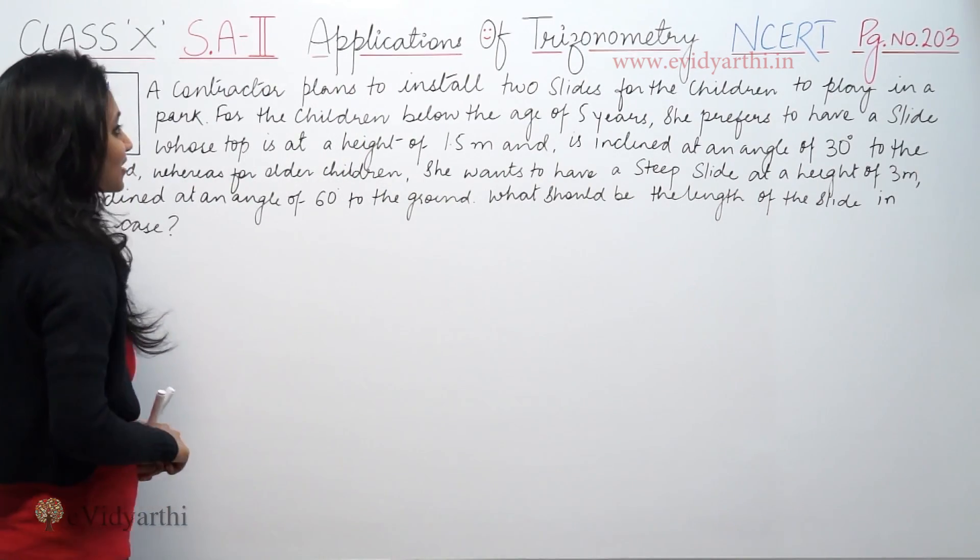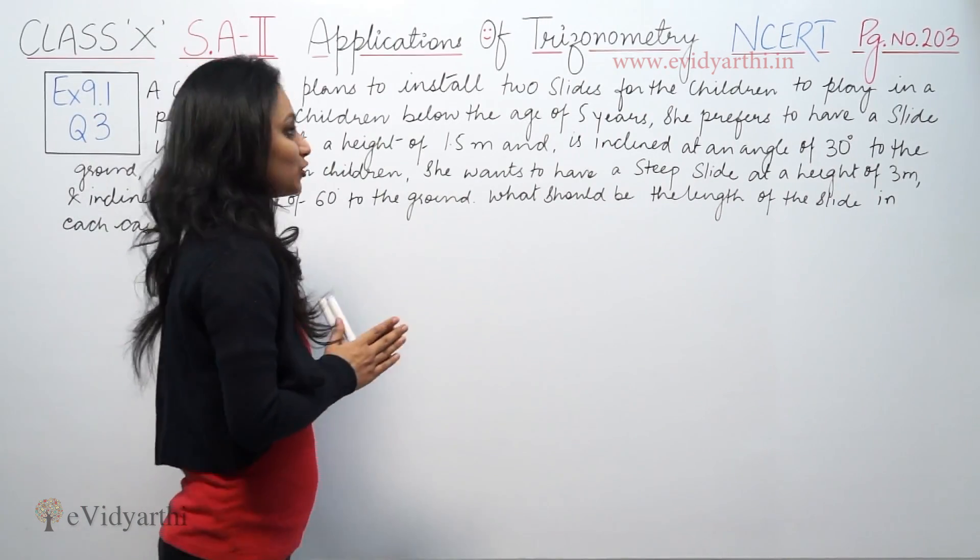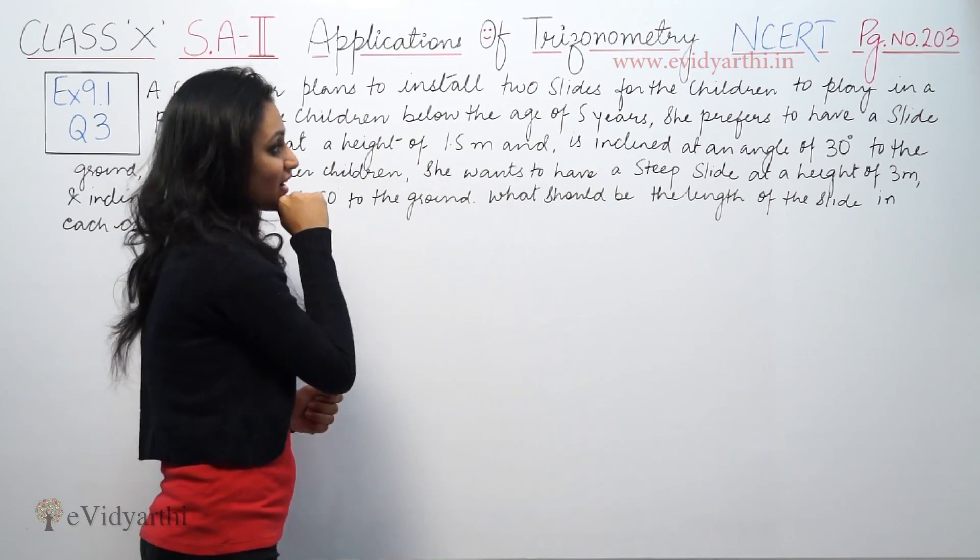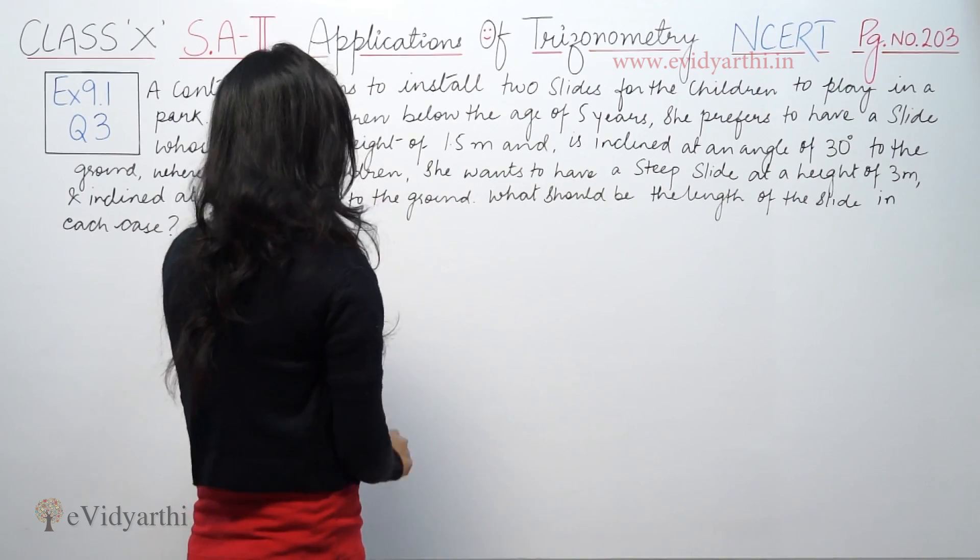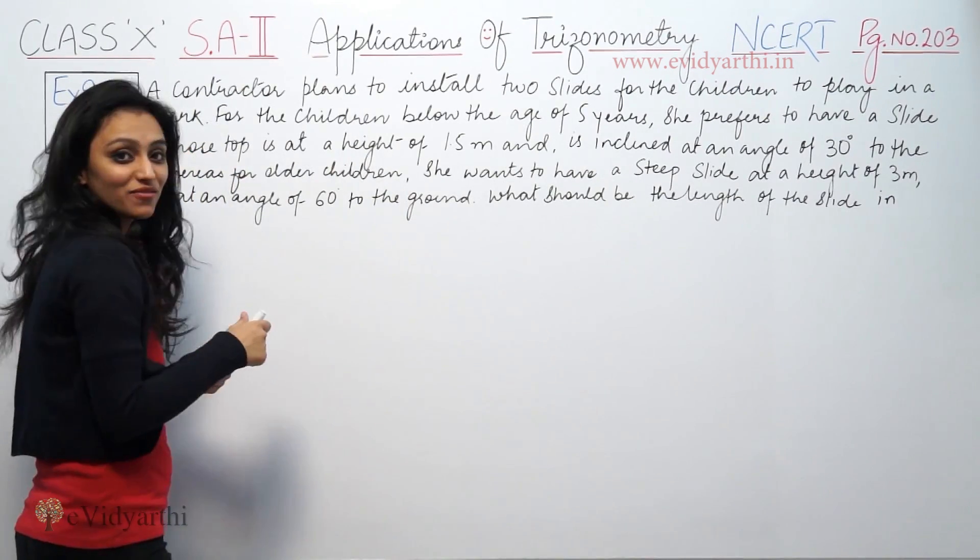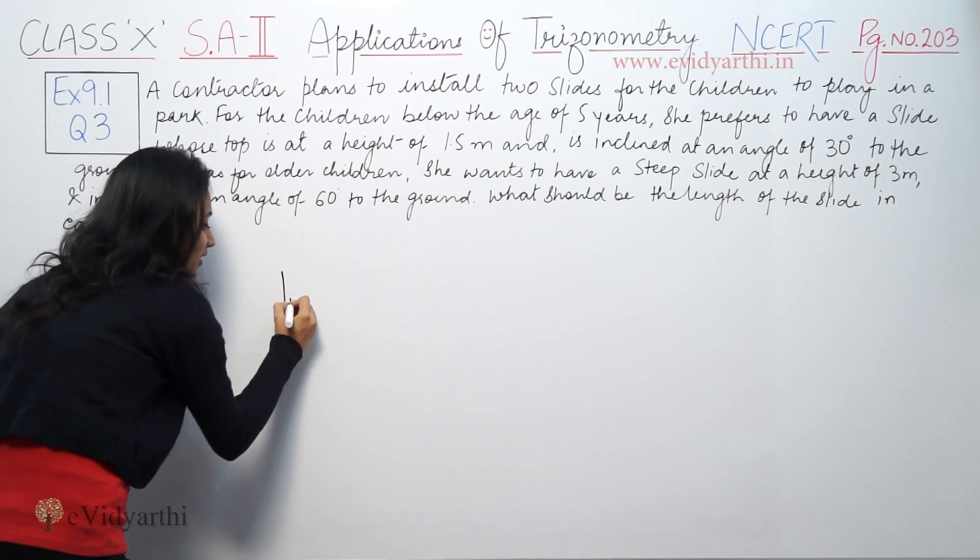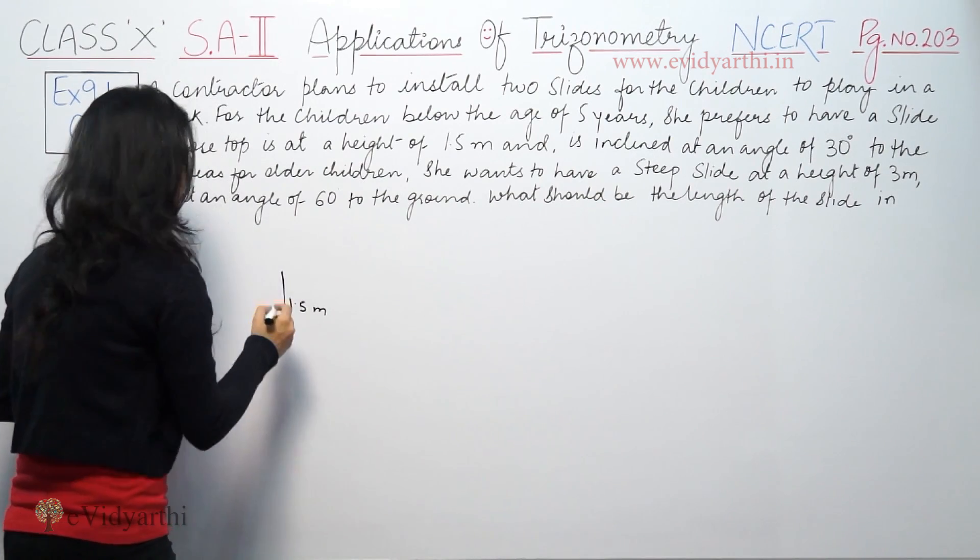A contractor plans to install two slides for children to play in a park. For children below the age of 5 years, she is supposed to have a slide where the top is at a height of 1.5 meters, and it is inclined at an angle of 30 degrees to the ground.